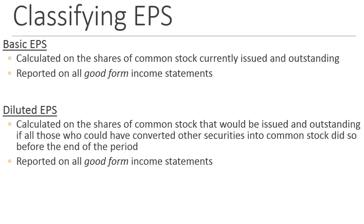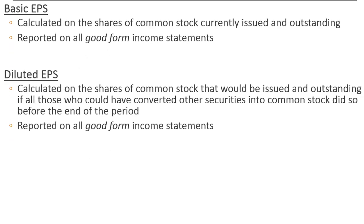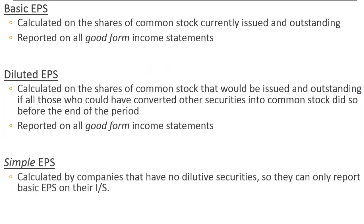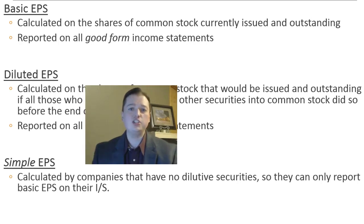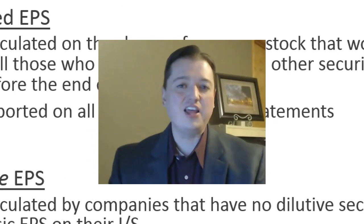There is one exception: companies with no dilutive securities — no stock options, no convertible debt, no preferred stock at all, such as small S-corps following GAAP — report what we call simple earnings per share. The term 'simple' indicates there are no dilutive items, so only a basic earnings per share number can be reported. Both basic and diluted EPS have covered our conceptual discussion; now it's time to jump into calculations, starting with basic earnings per share done the real way. We'll see you then.